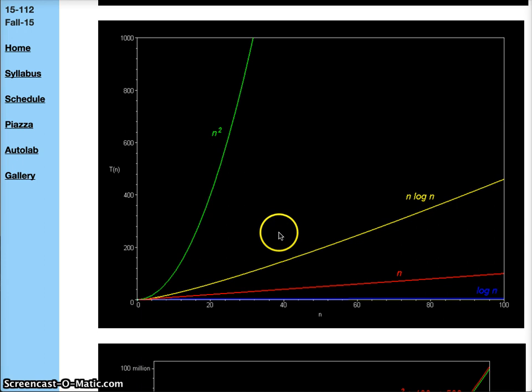If we look at this example, we can see how just without constants, N squared is greater than N log N, which is greater than N, with the best being log N.